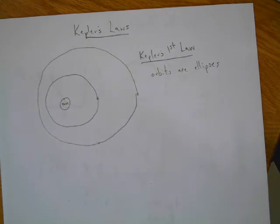But orbits are ellipses. That's number one, it's an ellipse. That should be super easy to understand. It's an ellipse.